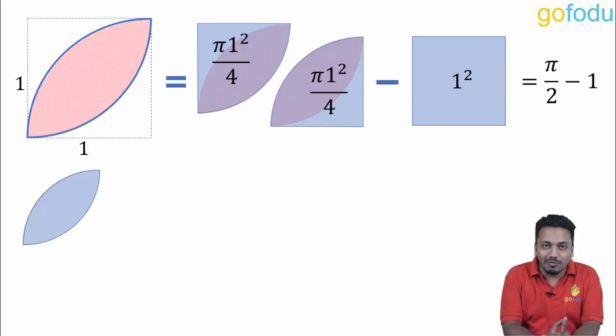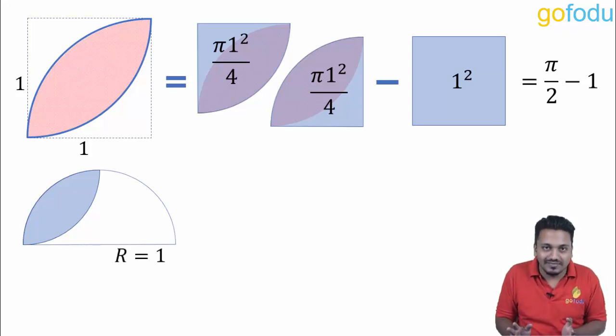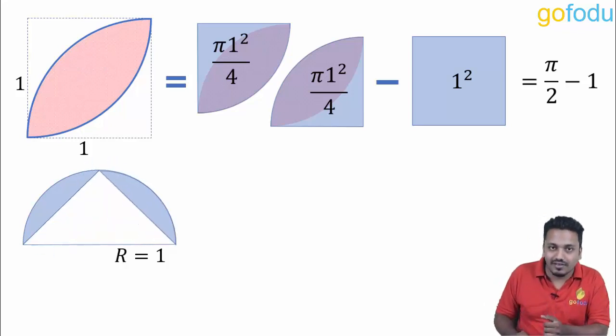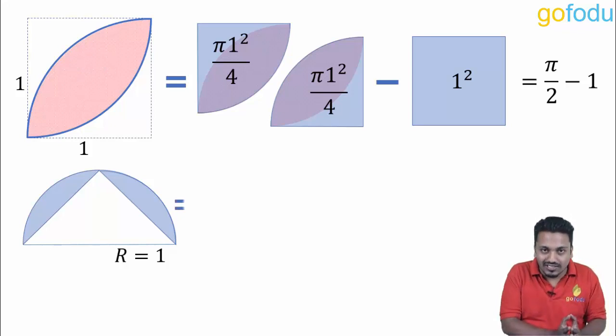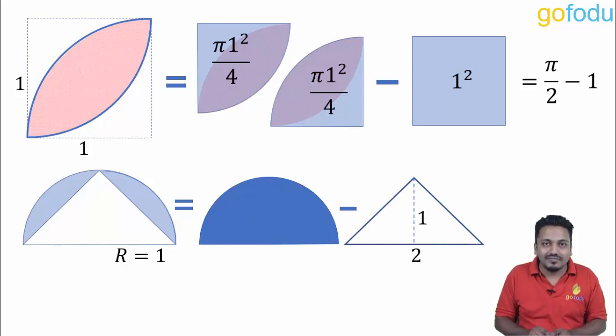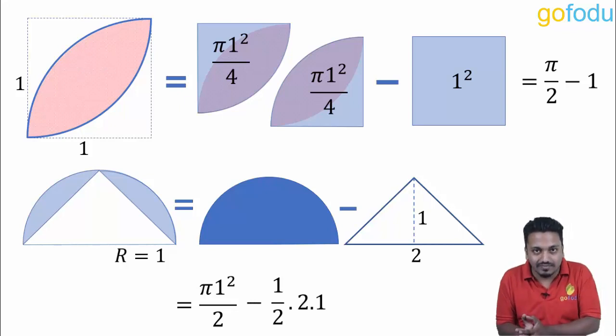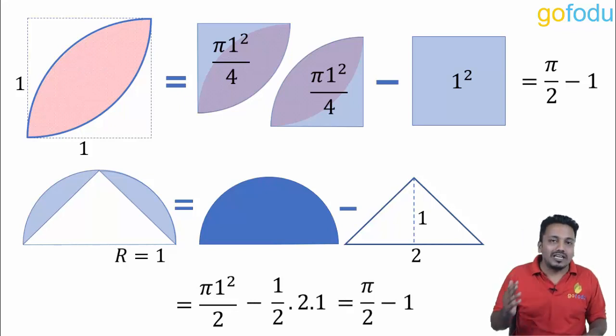There is another way we can proceed. The quarter circle can be extended to form a semicircle. Radius will remain same, one unit. Now this leaf can be divided into two equal parts from which one part can be placed like this. Now the area of shaded portion is area of semicircle minus the area of triangle. Area of semicircle is pi into one square upon two, minus area of triangle is half base two into height one. So this again is pi by two minus one.